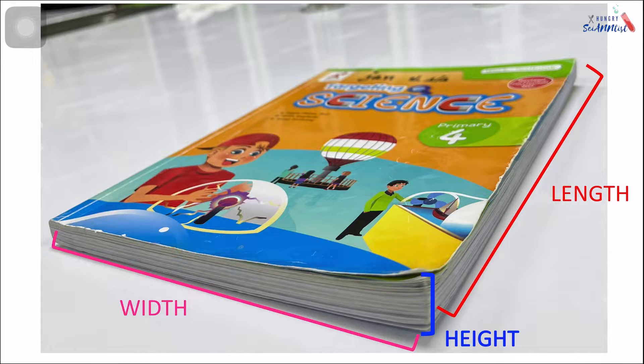For the science book, this is the length. Do not be confused. This is the height. And this is the width.